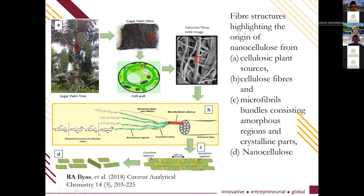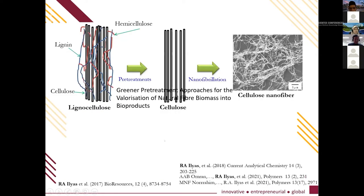One example from a cellulose plant is the sugar palm tree, in which I was involved in the isolation of nanocellulose from sugar palm fiber. We extract the cell wall cellulose using chemical treatment, delignification, and mercerization technique. From the micro-sized natural fiber we can then extract nanocellulose, and this is an image of nanocrystalline cellulose.